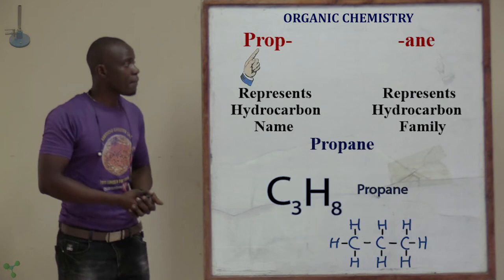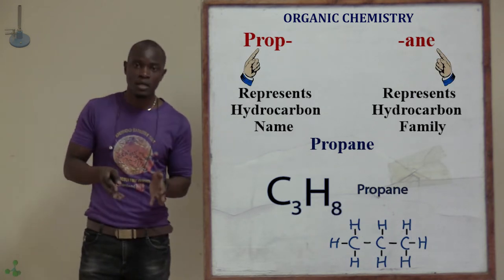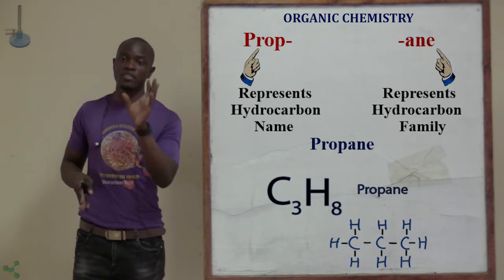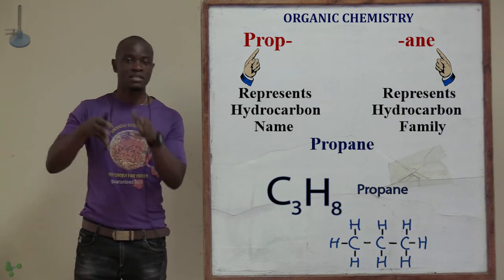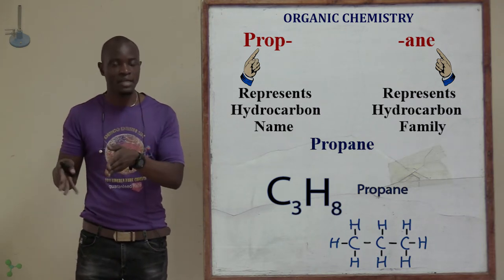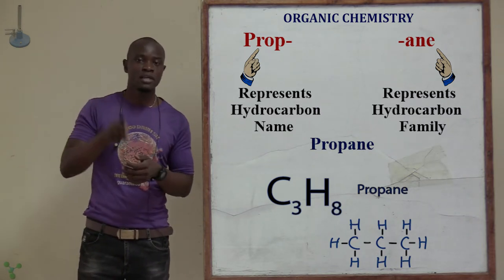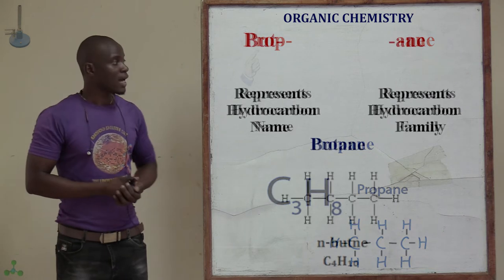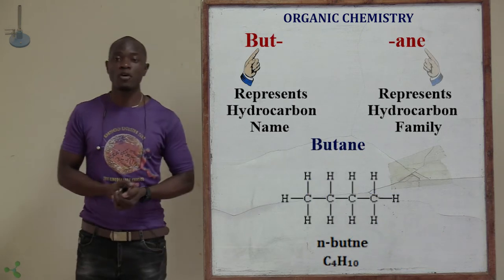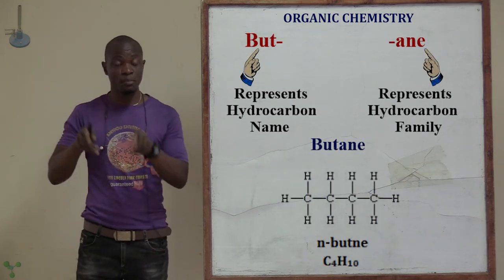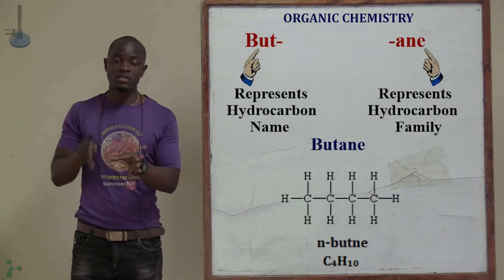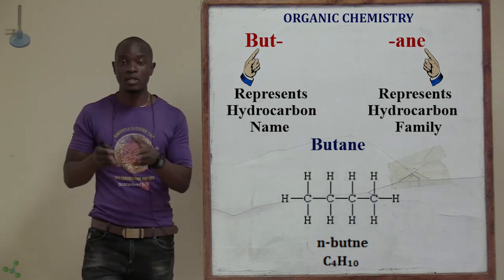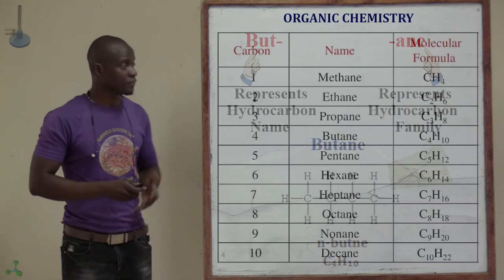The third member uses the prefix 'prop' — that is the name for three carbon atoms. But since it is in the alkane family, we end with A-N-E to read propane. Number four is 'but' — B-U-T — and since it's in the alkane family, we end with A-N-E to read butane.